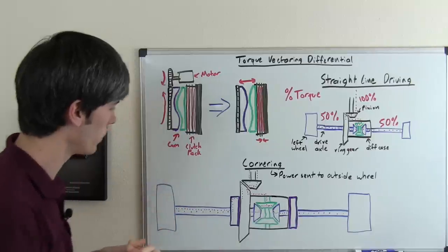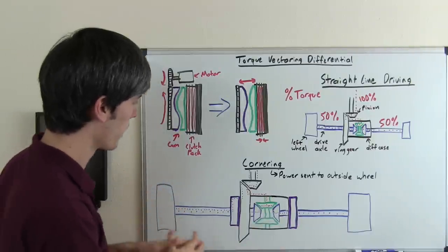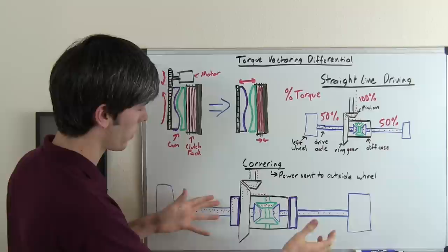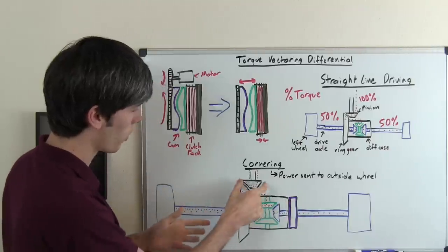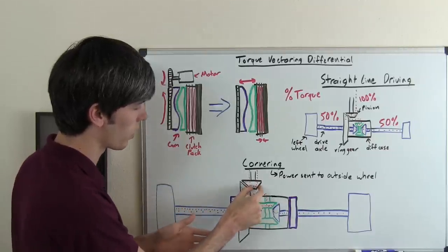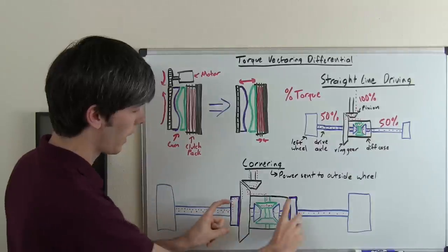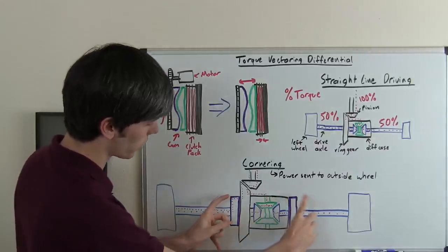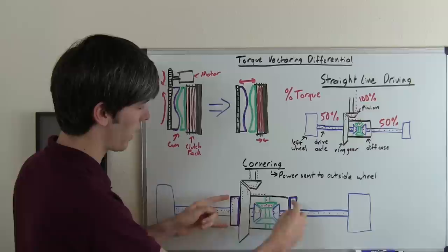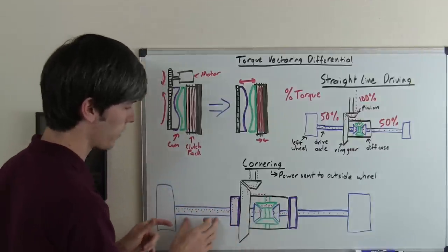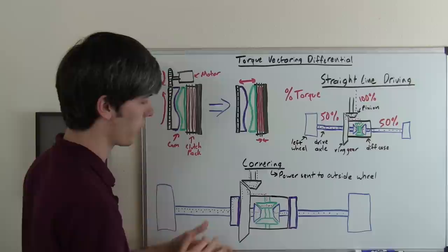So here we're looking at kind of a top-down view of this differential with the clutch packs so what we've got going on is you've got your pinion here and the ring gear and then these two rectangles I've drawn here in purple are the clutch packs and what they do is essentially connect this axle to the differential housing.